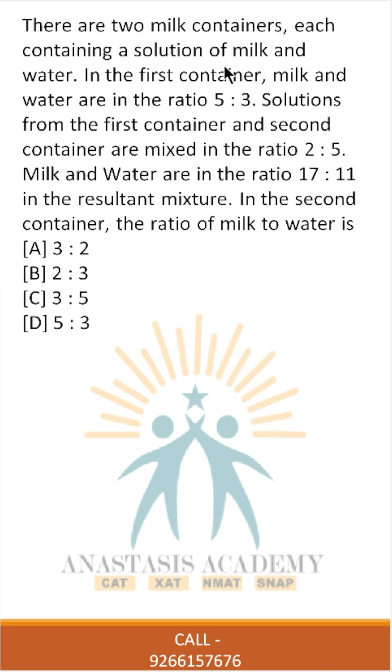Let's look at this question. There are two milk containers, each containing a solution of milk and water. In the first container, milk and water are in the ratio of 5 is to 3.